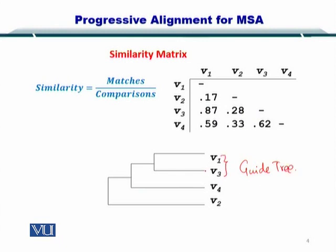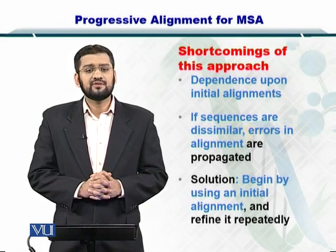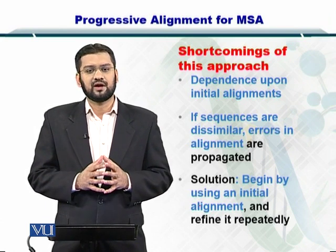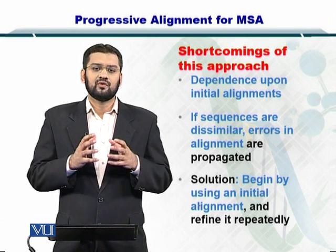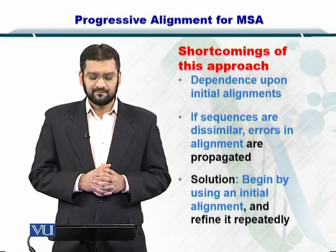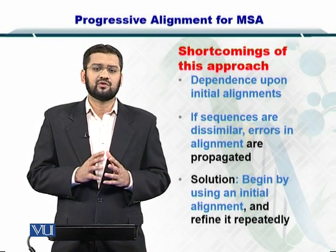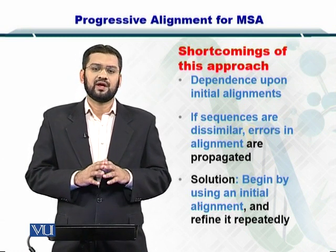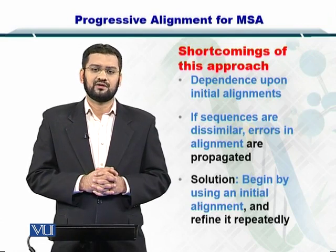More similar sequences are placed on the same branch, followed by sequences that are increasingly different. However, this approach has some shortcomings. For instance, if the first alignment performed is incorrect, then your entire guide tree will be biased towards that — there is a lot of dependence on the first alignment used to create the guide tree. Also, if the sequences are dissimilar, this can introduce error in your alignment. To overcome this, you create a guide tree and then repeat the process iteratively to create a better, improved version.